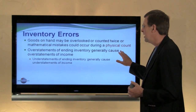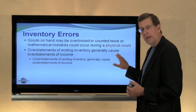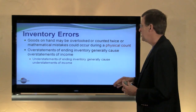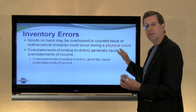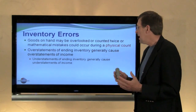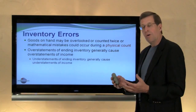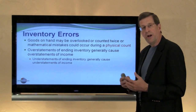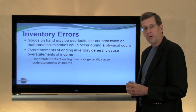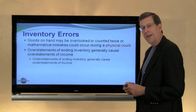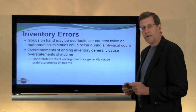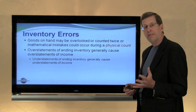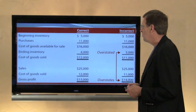A general rule is that overstatements of ending inventory will cause a similar overstatement of income. This is a before-tax consideration, so pre-tax income is overstated by the same amount as inventory is overstated, and vice versa. If you understate or undercount or undervalue your ending inventory, you'll similarly undervalue income by a like dollar amount. So it becomes very important that in taking a physical count of inventory, it's gotten right and done correctly.